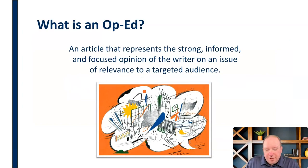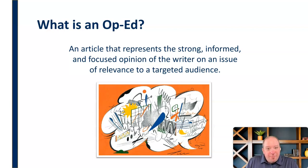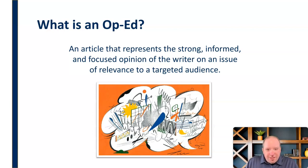So what is an opinion article, or what's popularly known as an op-ed? An op-ed is an article that represents the strong, informed, and focused opinion of the writer on an issue of relevance to a targeted audience. It's called that because the opinion page used to appear opposite the editorial page in traditional newspapers, so they just started calling it an op-ed. But really, it's an opinion article. Op-eds can have strong opinions — they are very subjective.